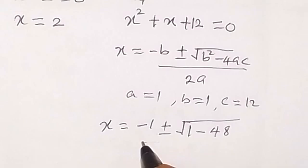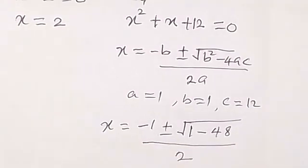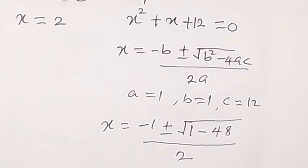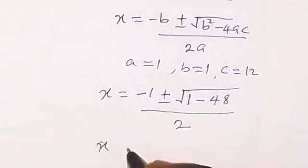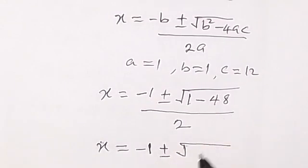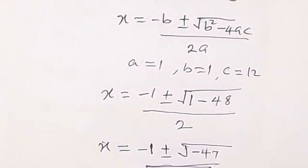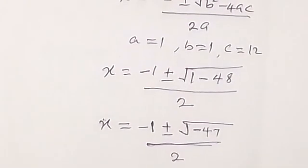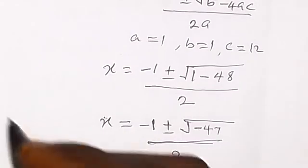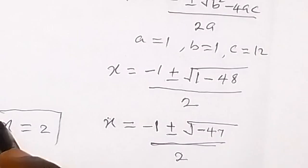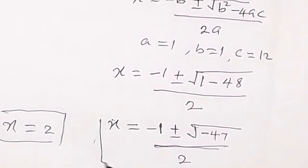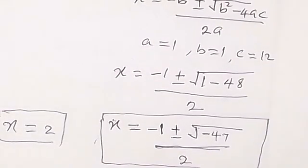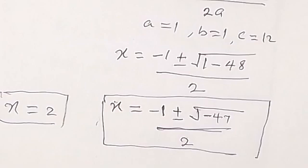Dividing by 2a, which is 2, we simplify to get x equals minus 1 plus or minus square root of minus 47, all over 2. We have a complex number here. So the possible values of x are: x equals 2, and x equals minus 1 plus or minus square root of minus 47, all over 2.